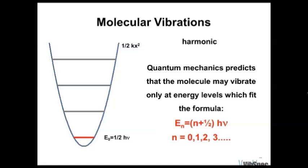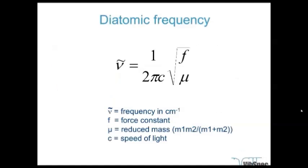If we look at a very simple diatomic molecule, we can see that in the ground state there is still some energy, meaning at every moment there is a bond vibration. This vibration can go to another energy level, but only quantized — a certain amount of energy is necessary to go from the ground state to the first vibrational level. It is not allowed to jump from the ground state directly to the second state.